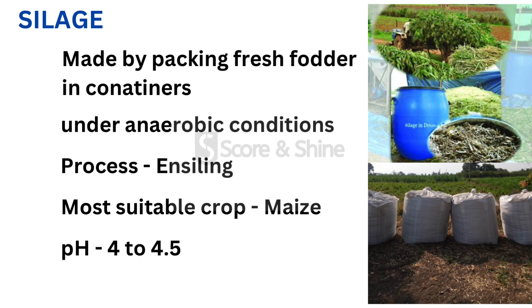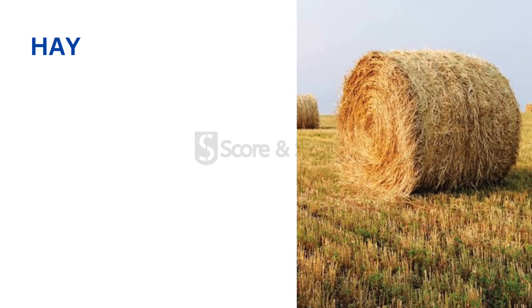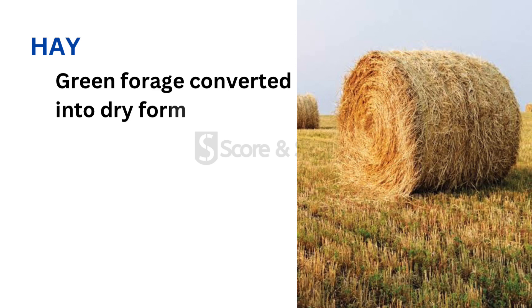The pH of good silage will be around 4 to 4.5. Moving on to hay — the green forage is cut and dried, converted into dry form without affecting the quality, and later used for feeding livestock. The storage moisture for hay should be less than 20 percent, and the optimum level is 15 to 18 percent.